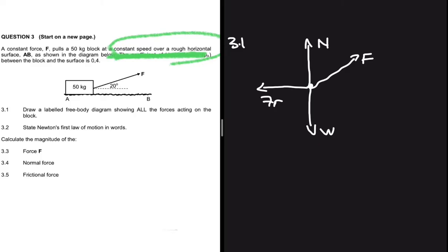Moving to question 3.2, let's state Newton's First Law of Motion. A body will remain in a state of rest or motion at constant velocity unless a non-zero resultant force acts on it.